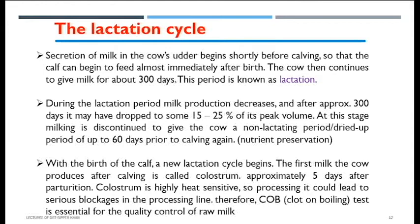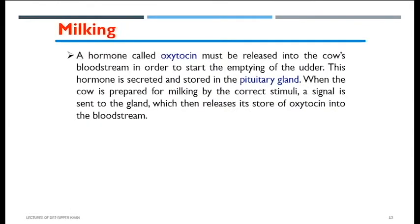Now we have a basic understanding of the lactation cycle — how long it lasts in cows and the purpose of the COB test. Let's now look at how the milking mechanism is triggered. In the pituitary glands, a hormone called oxytocin is stored. When a stimulus is provided to the cow, a message is sent to the hypothalamus, which triggers the release of oxytocin into the blood, which further triggers the emptying of the udder.